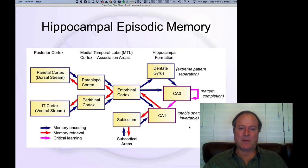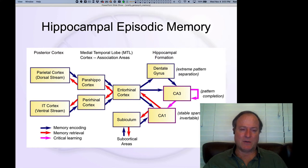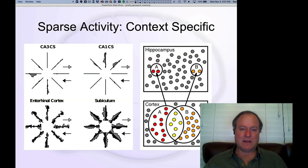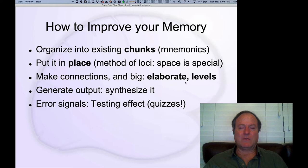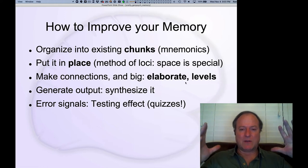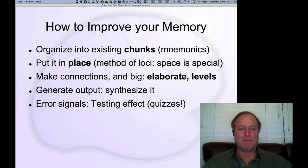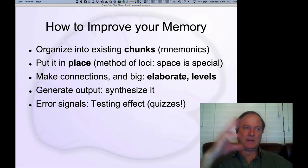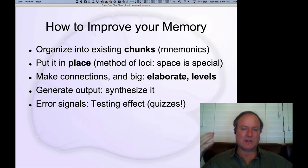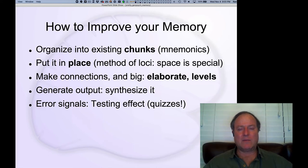Some people originally thought the hippocampus was just a spatial map system. It's a little more general than that, but space is a particularly important driver of the hippocampus. So if you put memory items into different locations, that provides a powerful way to encode and retrieve them. Memory champions create little stories placing items into different rooms in their house, with pathways from the kitchen to the living room — each location coding for a different item to remember.